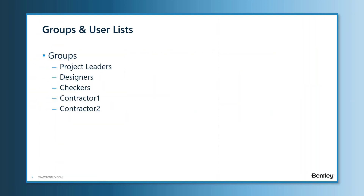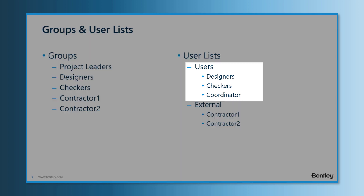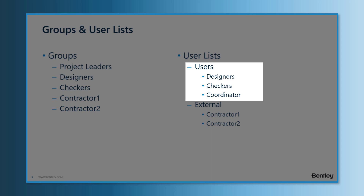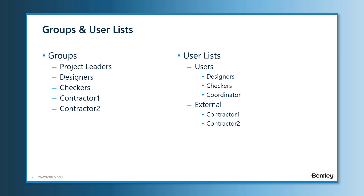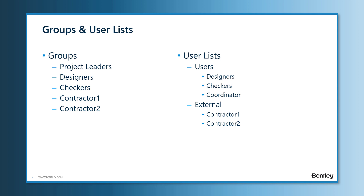From previous lessons, we have already created five groups: Project Leaders, Designers, Checkers, Contractor 1, and Contractor 2. We also created two user lists: Users and External. The Users user list includes Designers group, Checkers group, and Coordinator as members. We considered the External user list as external members, so Contractor 1 and Contractor 2 groups are members of the External user list. We will use these groups and user lists to set up folder and document permissions for the Learn folder.